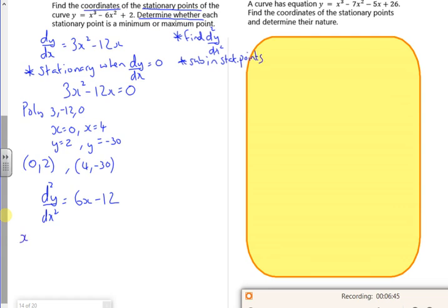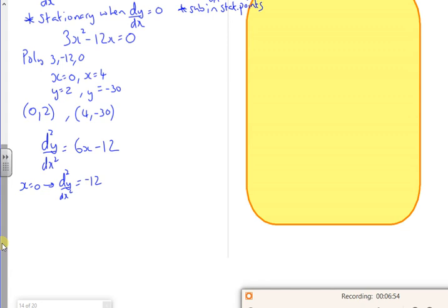So, when x is 0, d²y/dx² is minus 12. Now, I want to put, like a little, conclusion. So, as d²y/dx² is less than 0, therefore, max. Cat make max. Poing. Therefore, max at 0, 2.